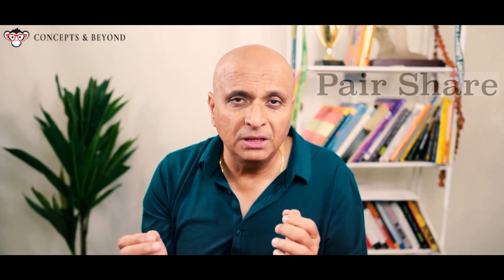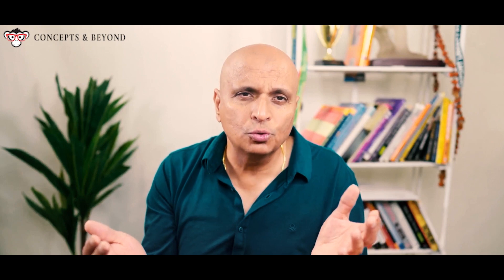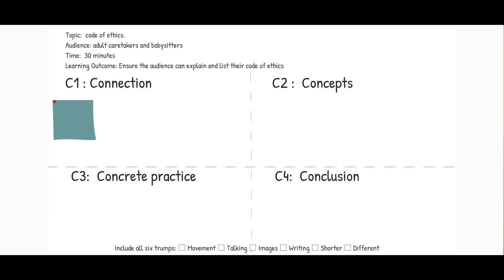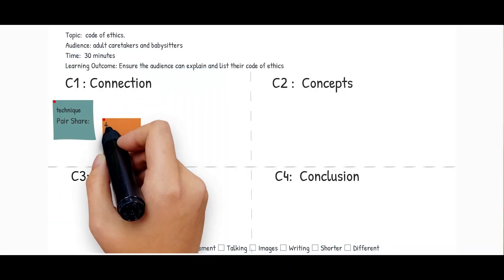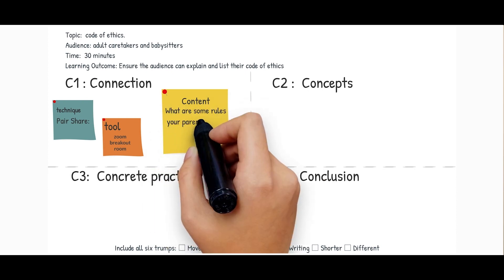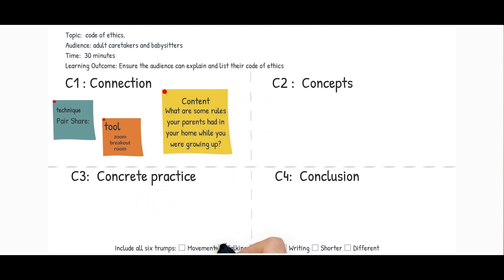For example, the technique I want to use for C1 is a pair share. I will ask my learners to pair up — either in person or in a Zoom breakout room for online training. Write down the technique on the first sticky note and stick it on C1. The tool will be the Zoom breakout room — write that on the second sticky note. The question seeding the conversation — the content of C1 — is: 'What are some rules your parents had in your home while you were growing up?' Write that on the third sticky note. C1 gives learners something they can easily relate to and lets them answer in the privacy of one or two participants instead of with the whole class, so they feel psychologically safe.